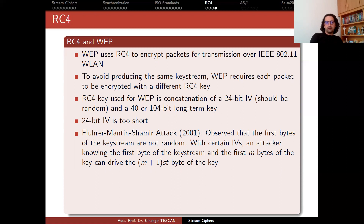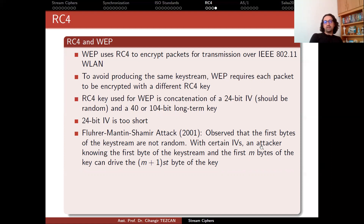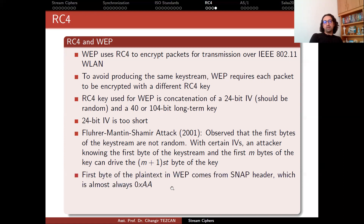There are many attacks on WEP. One important one is the Fluhrer-Mantin-Shamir attack, published in 2001. They observed that the first bytes of the key stream are not random. With certain weak IVs, an attacker who knows the first byte of the key stream and the first M bytes of the key can derive the M-plus-first byte of the key — a byte-by-byte recovery attack. The first byte of the plaintext in WEP comes from the SNAP header, which is almost always 0xAA in hexadecimal. So once you obtain the ciphertext, you XOR it with this value to get the first byte of the key stream, and then perform the Fluhrer-Mantin-Shamir attack.